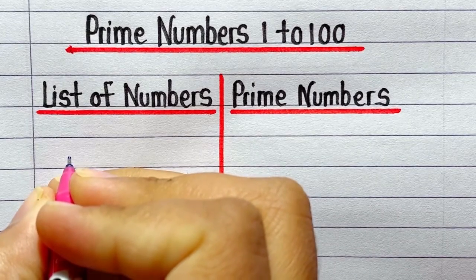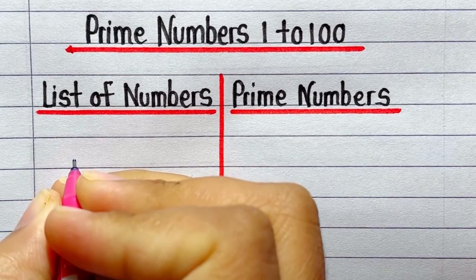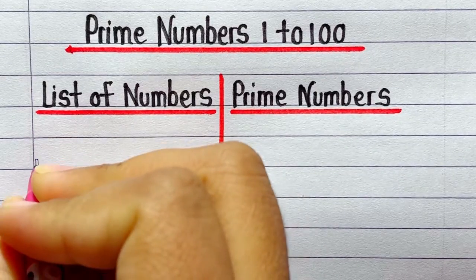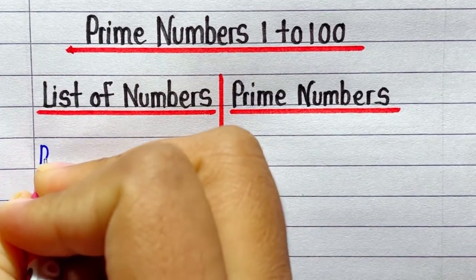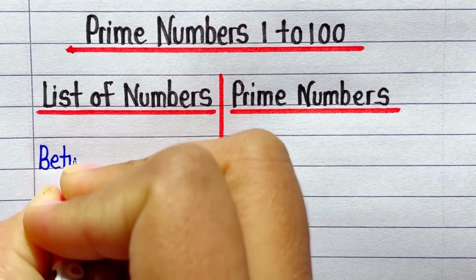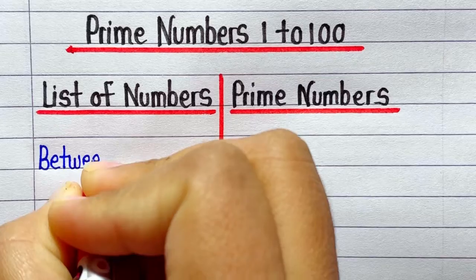Hello everyone, welcome to my channel Saaj Education. In this video we are going to see prime numbers between 1 to 100. There are 25 prime numbers from 1 to 100, so let's see the list of prime numbers from 1 to 100.